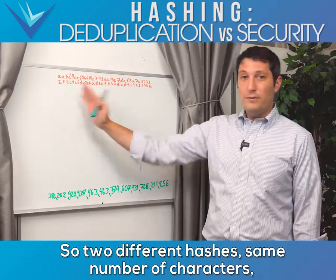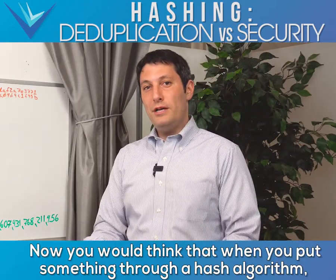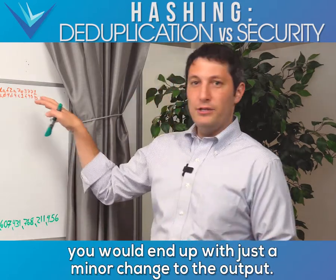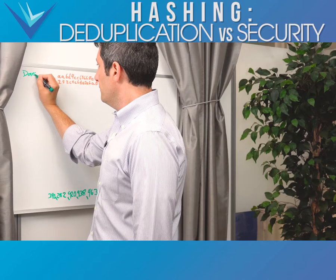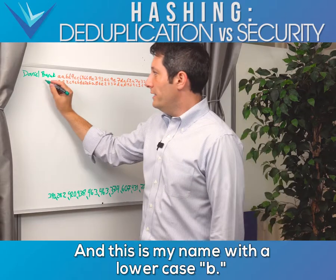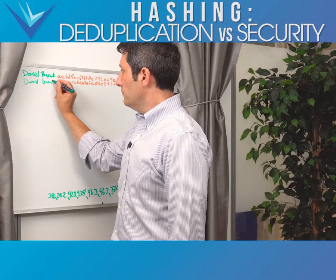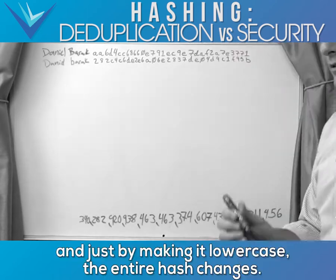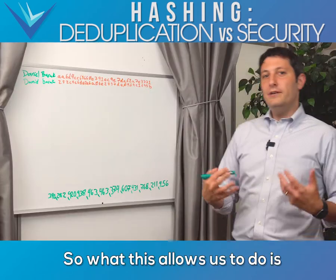Two different hashes, same number of characters, but completely different characters. You might think that if you made a minor change to something put through a hash algorithm, you'd get just a minor change to the output. But here, this is my name, and this is my name with a lowercase 'b' — and you can see the entire hash changes when I just change one letter. Just making it lowercase changes the entire hash; it's not just a minor variation.